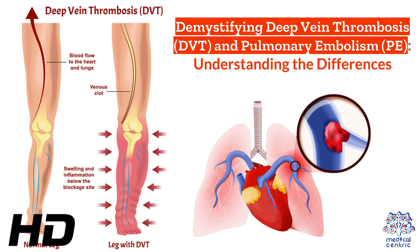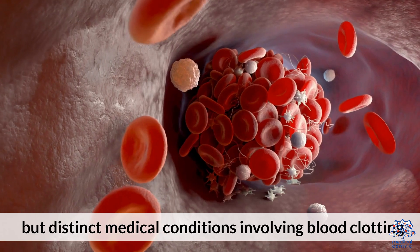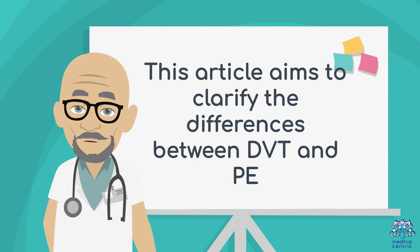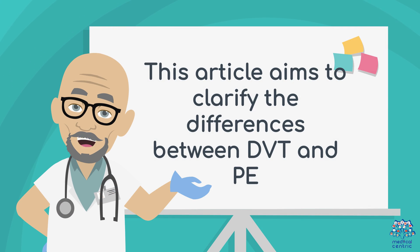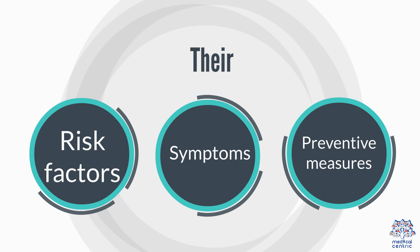Today's medical-centric topic is Demystifying Deep Vein Thrombosis, DVT, and Pulmonary Embolism, PE: Understanding the Differences. DVT and PE are two related but distinct medical conditions involving blood clotting. This article aims to clarify the differences between DVT and PE, their risk factors, symptoms, and preventative measures.